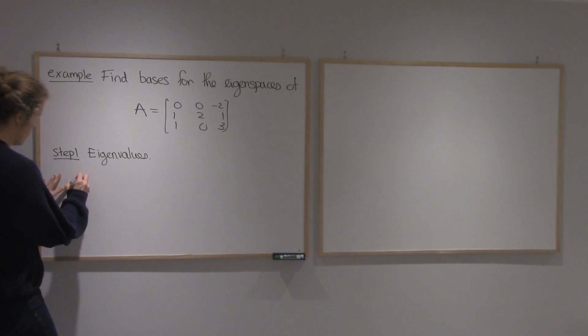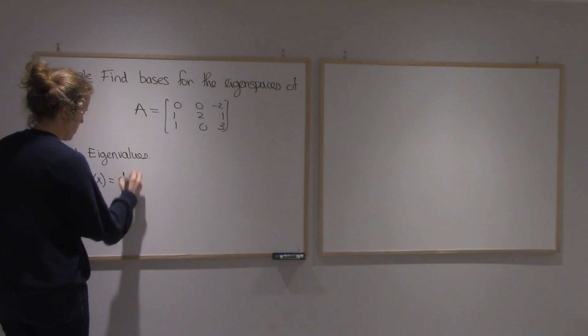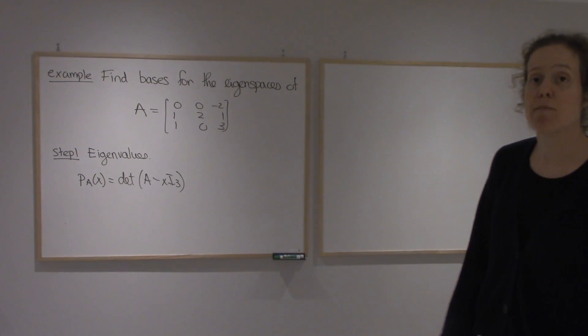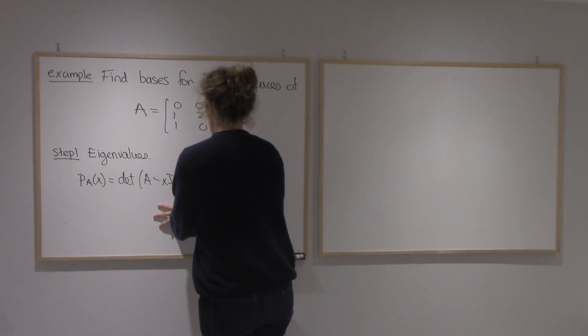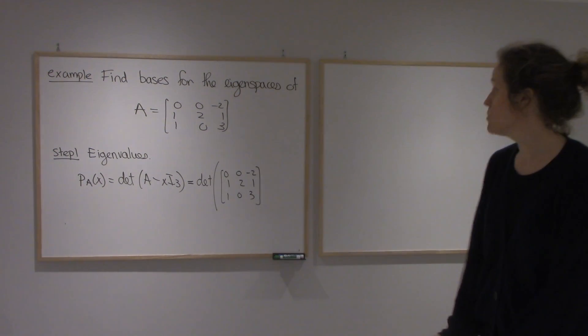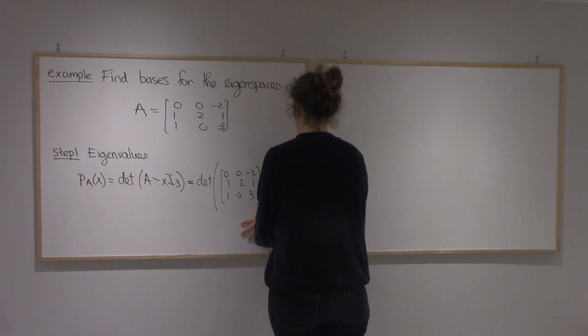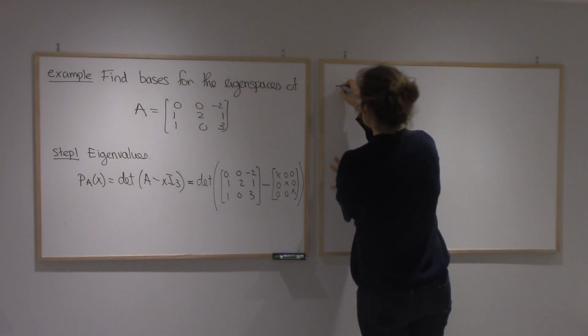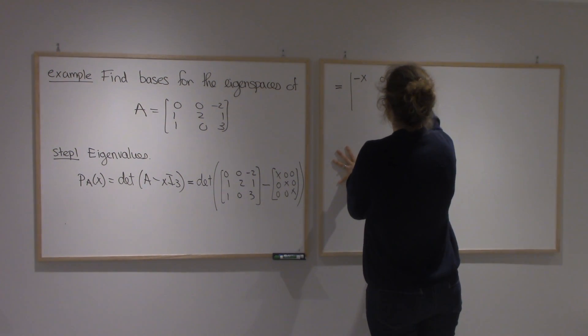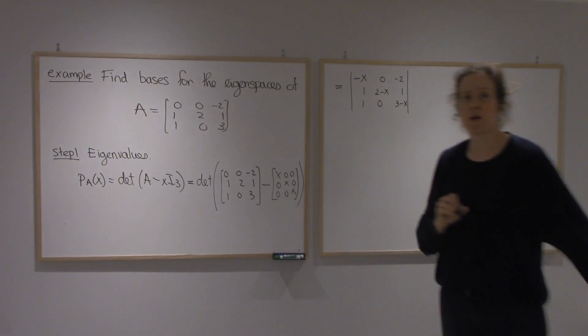We need the characteristic polynomial. Since we have a 3x3 matrix, it's going to be the determinant of A minus x times I3. So I'm going to take my A and subtract x's from the diagonal. Let me use the bars for determinants, so I'm going to get the determinant of this matrix.